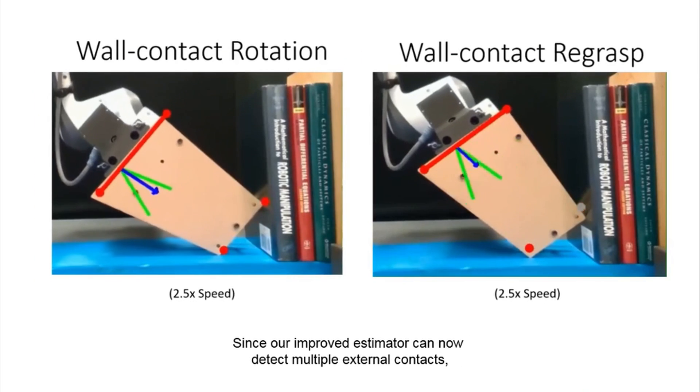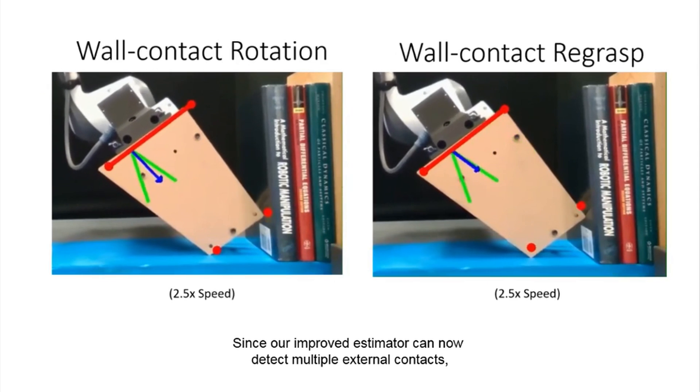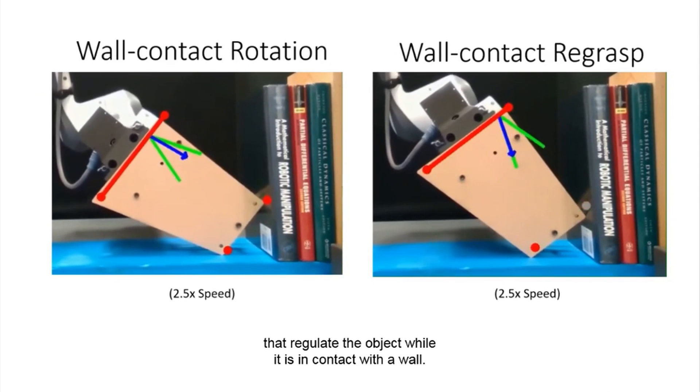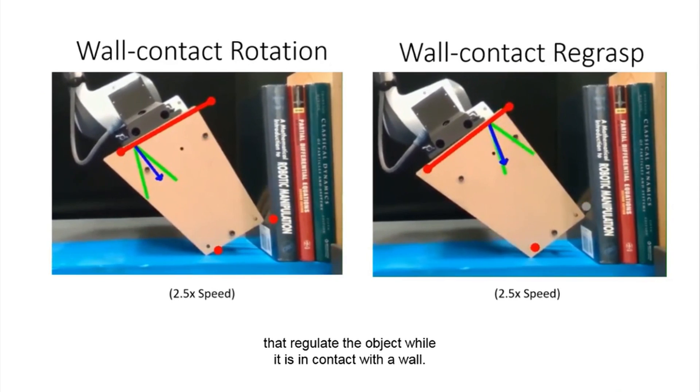Since our improved estimator can now detect multiple external contacts, we have designed new motion primitives that regulate the object while it is in contact with a wall.